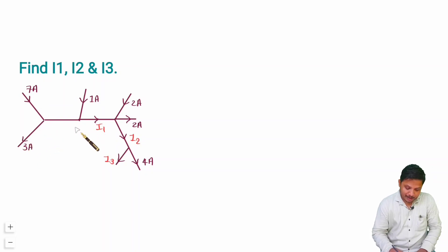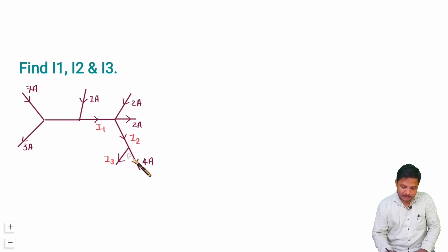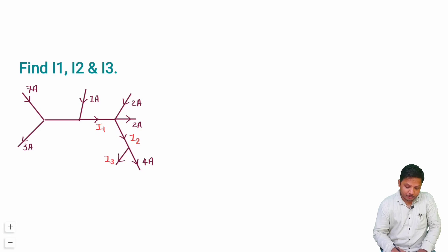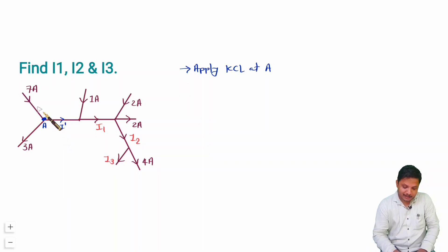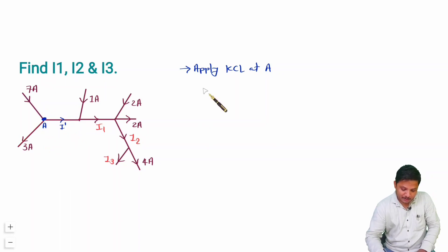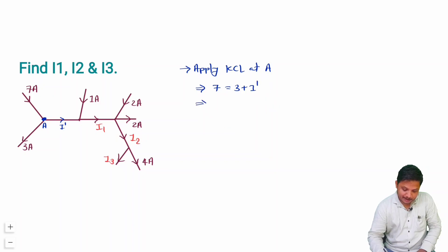In this question we have branches with currents given, and we need to find I1, I2, and I3. I1 is in one branch, I2 in another, and I3 in a third. We start by considering node A with an intermediate current I-dash. Applying KCL at node A: entering current is 7, leaving currents are 3 and I-dash. So 7 = 3 + I-dash, giving I-dash = 4 amperes.